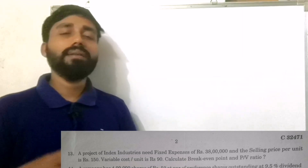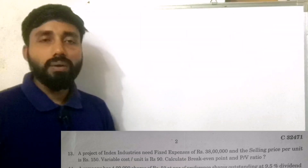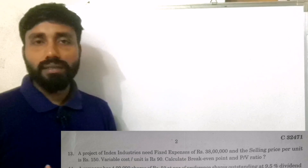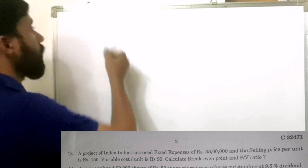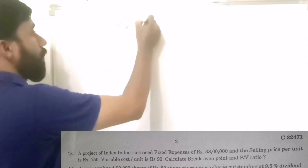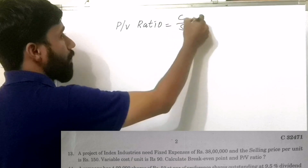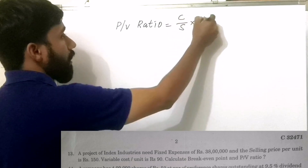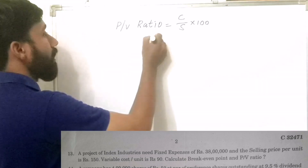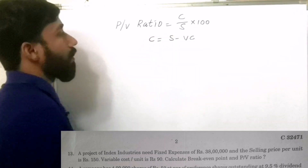How do we work out this way? If we calculate the Break-Even Point, first we find PV Ratio. PV Ratio is equal to Contribution divided by Sales into 100. Contribution is equal to Sales minus Variable Cost.